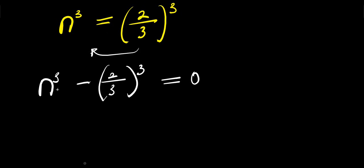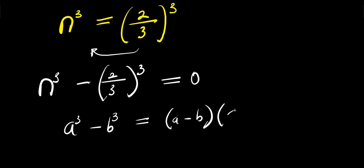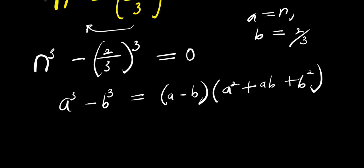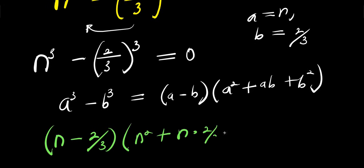So we need to expand this, and for us to achieve that we consider this identity: if you have a³ minus b³, this equals (a minus b)(a² plus ab plus b²). And my a is n and my b is 2/3. So from here I have (n minus 2/3)(n² plus n times 2/3 plus (2/3)²) equals 0.